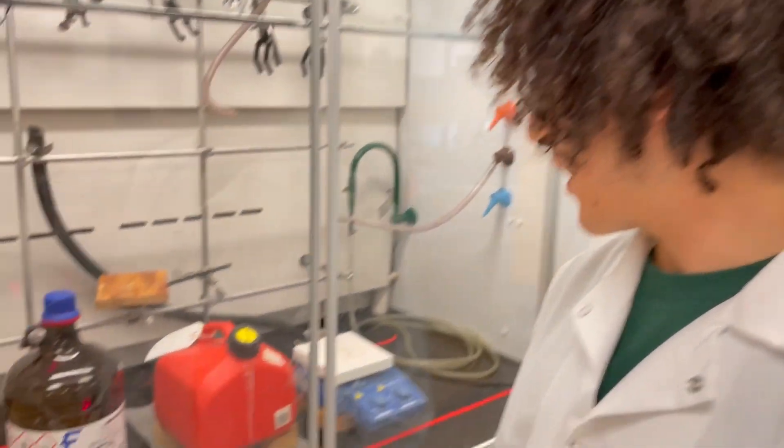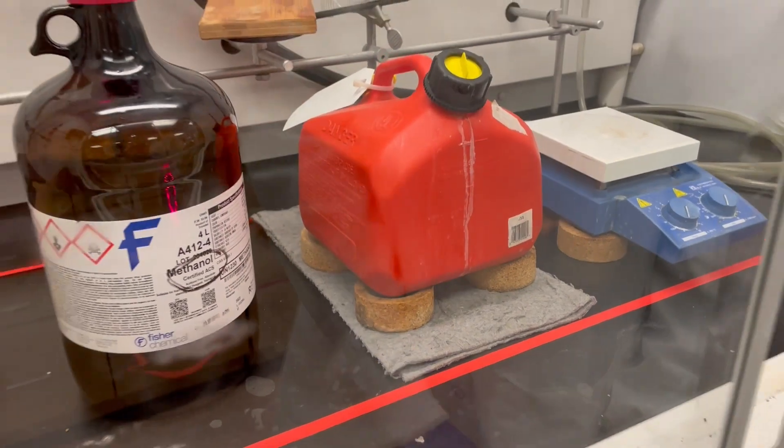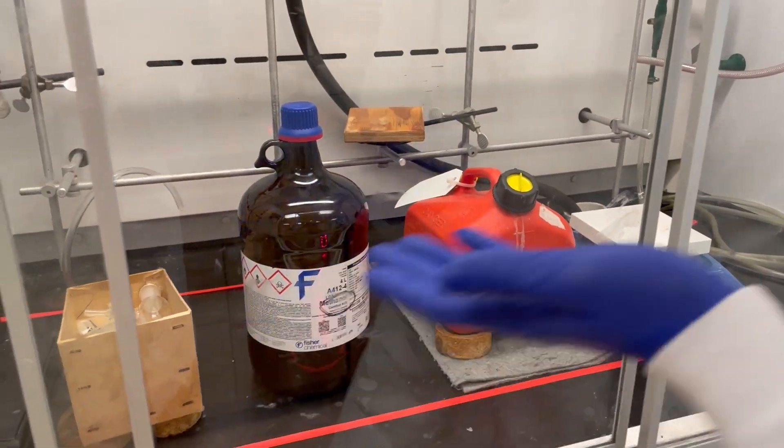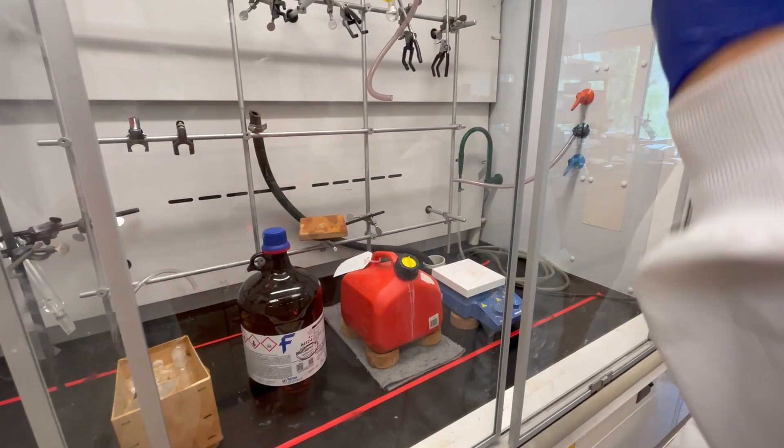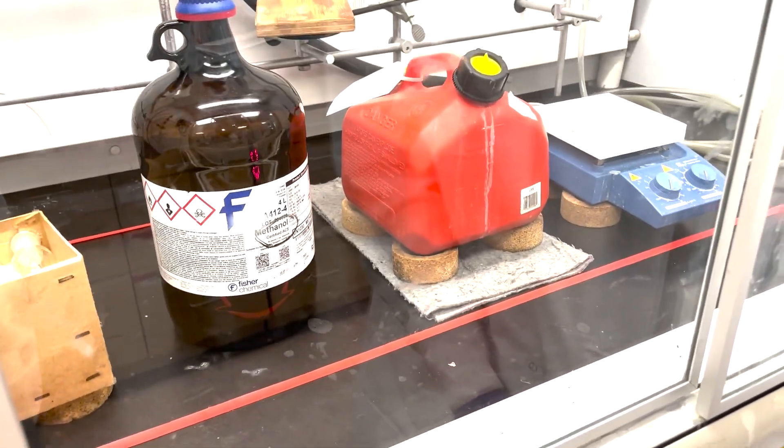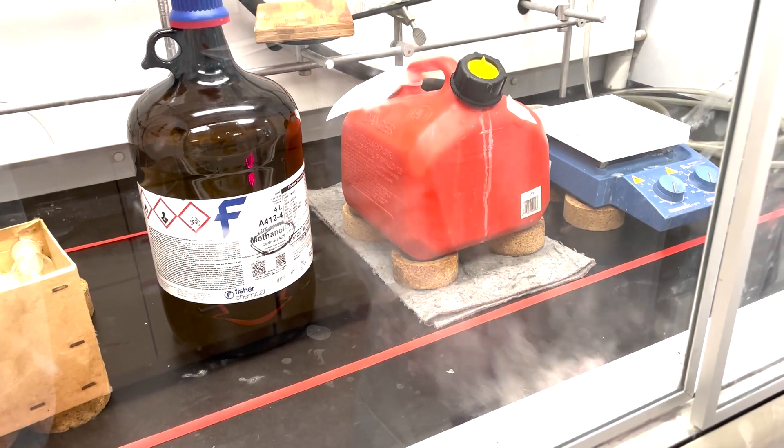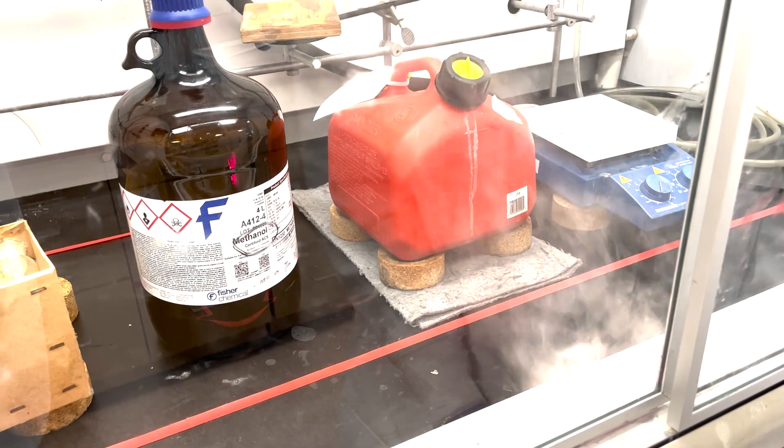Now we have a more organized fume hood with bulky objects placed on platforms to help with circulation. We also have sashes closed to assist with the face velocity or the downward motion of air through the fume hood. When we perform the smoke test, we see that the smoke moves directly to the rear exhaust system with minimal turbulence.